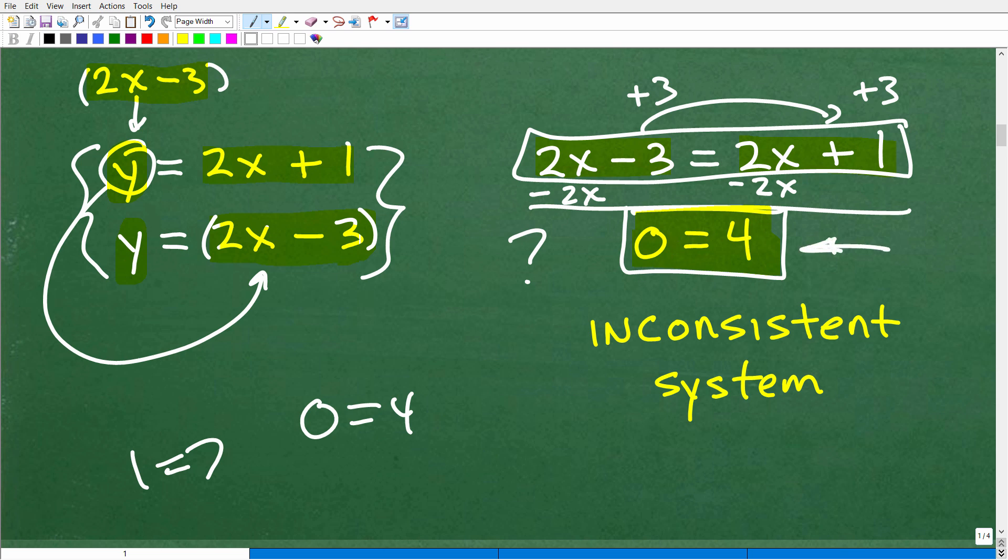So, this right here is algebraically telling you that this system has no solution. And there's a fancy name that goes along with this, and that's called an inconsistent system. Systems that have solutions are called consistent systems. Systems that do not have a solution, like in this particular problem, is called inconsistent.